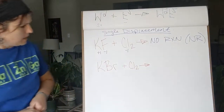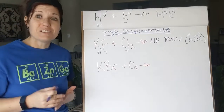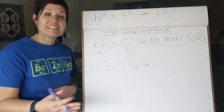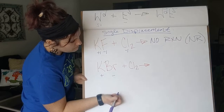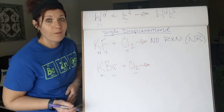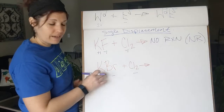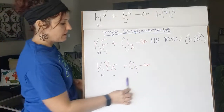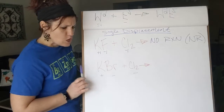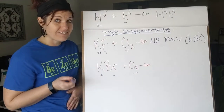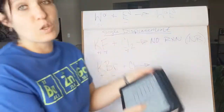I wrote another example to show one where a reaction does happen. For potassium bromide plus chlorine, we recognize it's single displacement. Potassium is plus one, bromine is minus one, and chlorine is negative one. We check the activity series to compare chlorine and bromine. Chlorine is higher in the activity series than bromine, so this reaction will occur — chlorine is going to kick bromine out.